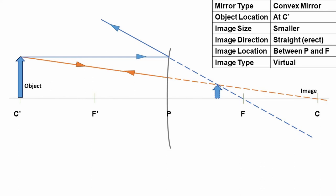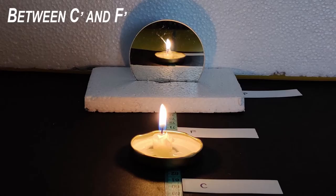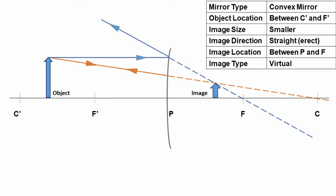When the candle is placed between points C' and F', no image is formed on the screen, but an image is formed inside the mirror. Again, the blue and orange lines after getting reflected off the mirror travel away from each other and do not meet, so no real image is formed. The rays, when extended backwards, form an image in the mirror which is smaller than the actual size of the object, erect, and virtual in nature.